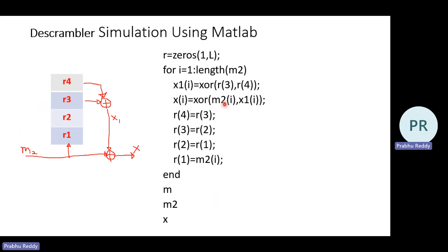X of I is an XOR between M2 of I and X1 of I. This is my X. And after that, all the shift register's content has to be shifted. R1 is to be placed at R2, R2 is placed at R3 and R3 placed at R4 and M2 of I is placed at R1. So R4 is assigned with R3, R3 is assigned with R2, R2 is assigned with R1, R1 is assigned with M2 of I and then end. So at the end, this is the part of the scrambling operation.